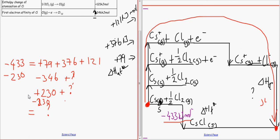So the question mark would equal, because if you're minus 230 on both sides, that would equal minus 663 kilojoules per mole. So lattice enthalpy, the delta H of lattice enthalpy will equal minus 663 kilojoules per mole.